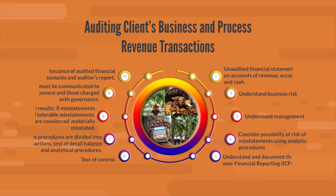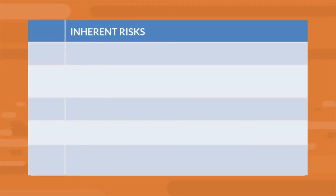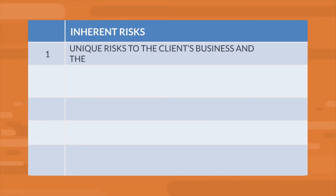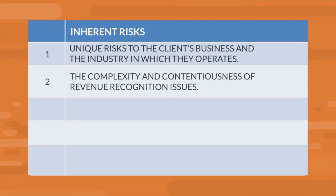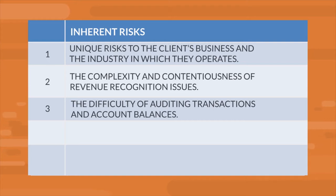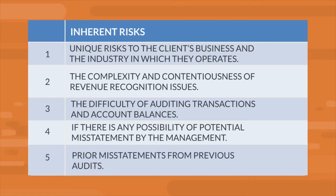A poster is provided that outlines the steps taken by the auditor in auditing the related accounts pertaining to revenue transactions. The starting point is to understand the inherent risk that is particularly unique to the client's business and the industry in which they operate, also known as the environment or industry-related factors. Second, the complexity and contentiousness of revenue recognition issues. Third, the difficulty of auditing transactions and account balances. Fourth, any possibility of potential misstatements by management, also known as management integrity. Fifth, prior misstatements from previous audits.